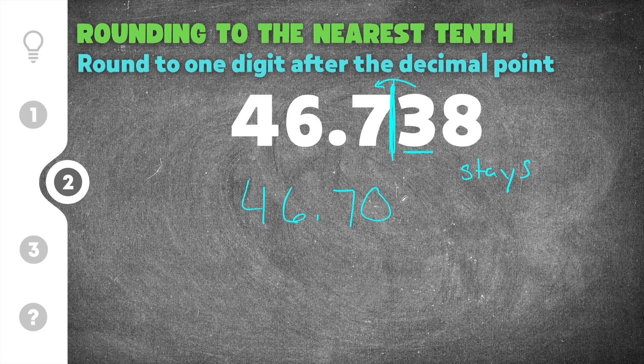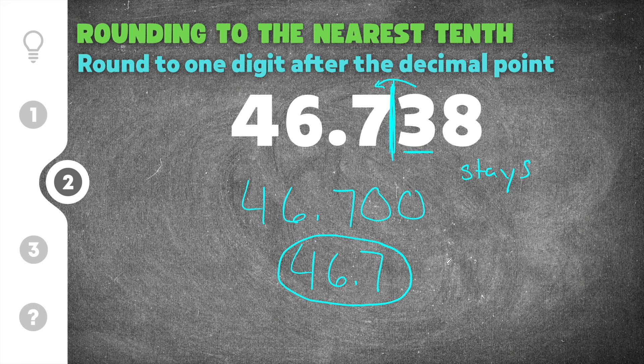And then the two numbers after the seven are going to turn to zeros at first because we're rounding to that tenths value. So we're going to round three eight down to zero zero because it needs to round to the tenths. And then when I write my final answer, I don't include the zeros because they represent a value of nothing. So our final solution is going to be 46.7, and you can see the last number that we have is our tenths value.